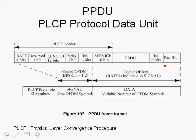At the end of the packet, we include 6 tail bits, again to flush the convolutional encoder and drive its state to zero, just as is the case for the signal field.